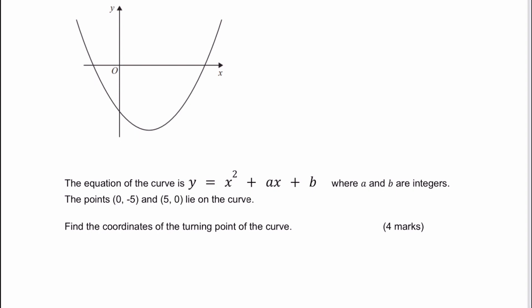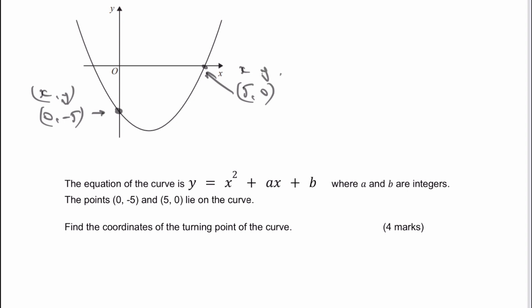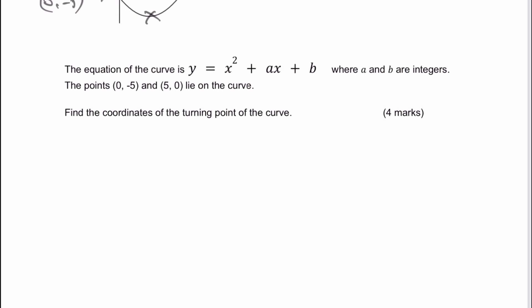What we're basically saying is that this point here is going to be the value of x and the value of y, which is (0, -5), and it's the y-intercept. And this point at the top here is also going to be (5, 0), and that's the point for x and y. We can use that information to work out the coordinates of the turning point, which is going to be this point at the bottom here. Let's have a look and see what we can work out.